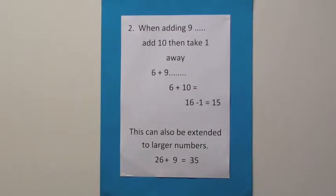This strategy can also be extended to larger numbers, such as this one here, 26 plus 9. If we just add on 10 to the 26, we'll instantly know that it's 36 and then take one away to have the final answer at 35.